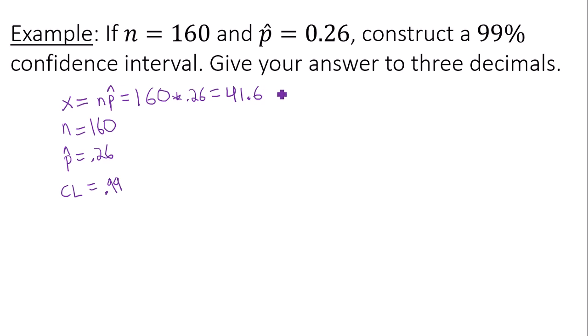And you can round this to 42, but to keep your answer as accurate as possible, we're going to leave it as 41.6. So my goal is going to build a confidence interval predicting the true population proportion p. I'll have a left bound and I'll have a right bound.